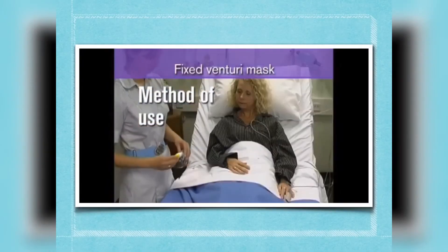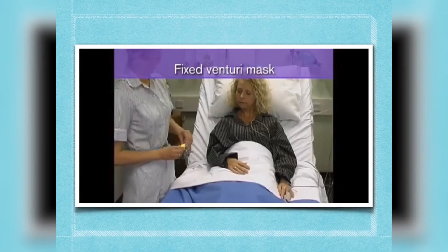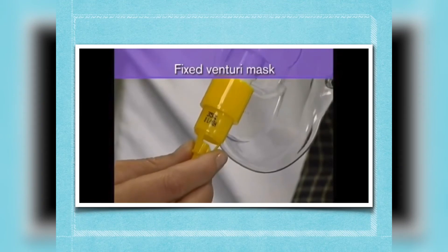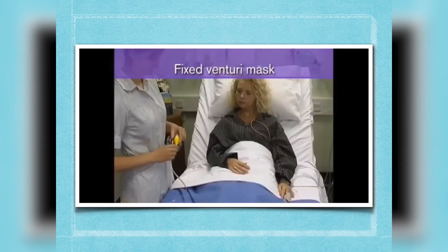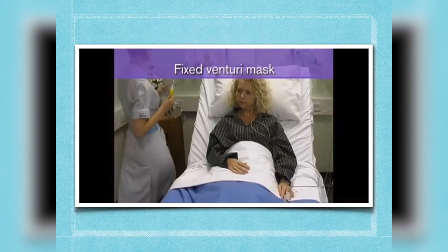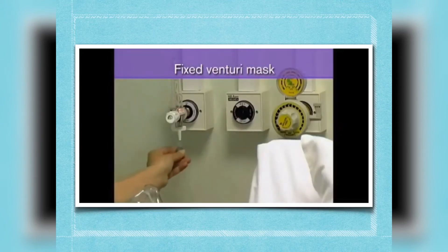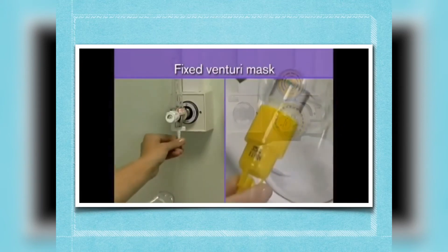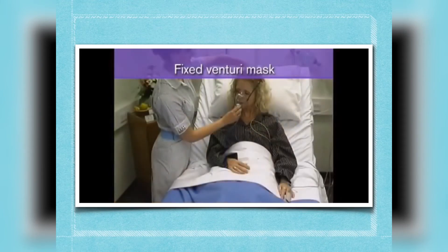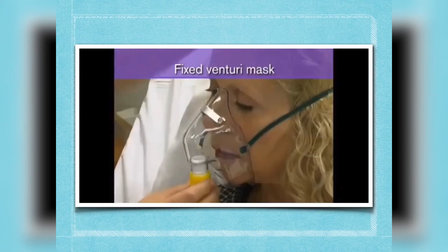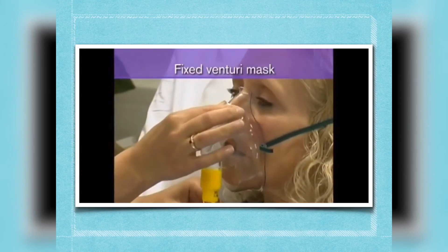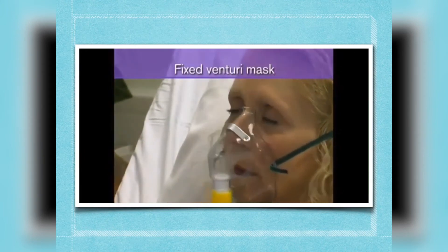Venturi mask application: select a Venturi valve of the prescribed oxygen concentration and attach it to the mask. Attach one end of the oxygen tubing to the valve spigot and the other end to the oxygen flow meter. Set the flow meter to the flow indicated on the valve. Place the mask over the patient's nose and mouth and tighten the elastic to obtain a secure and comfortable fit. If the mask has a nose clip, it should be pinched to provide the best possible fit.